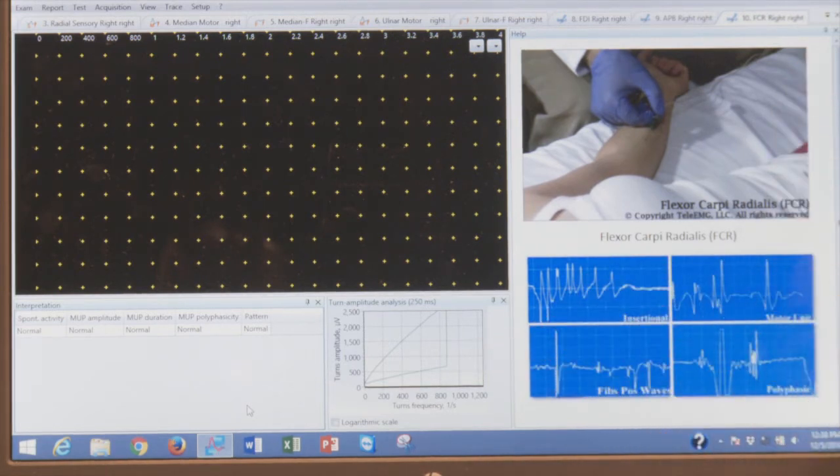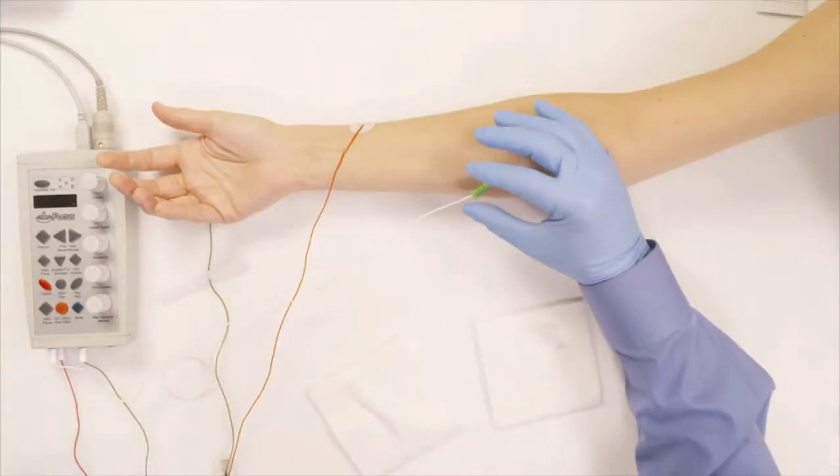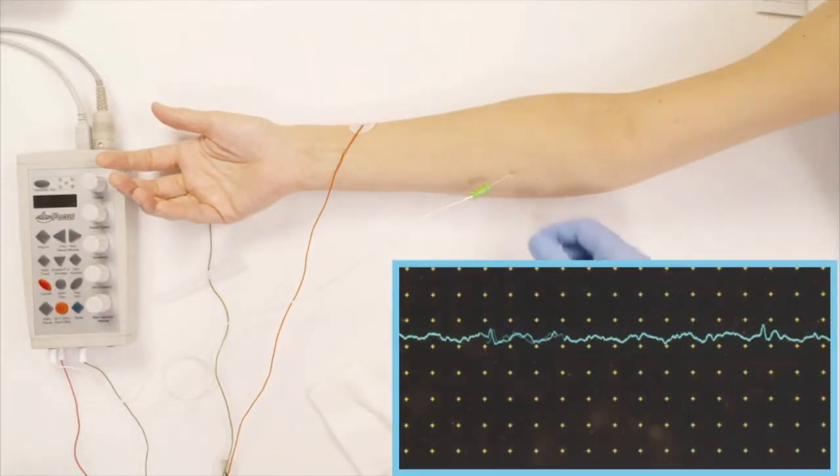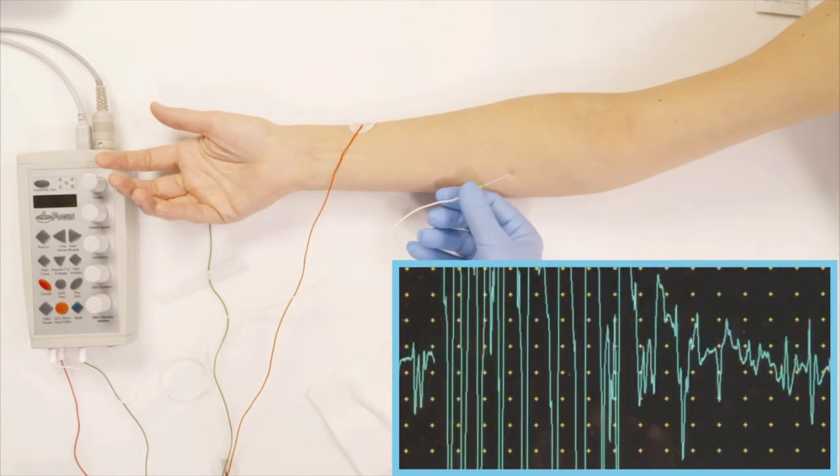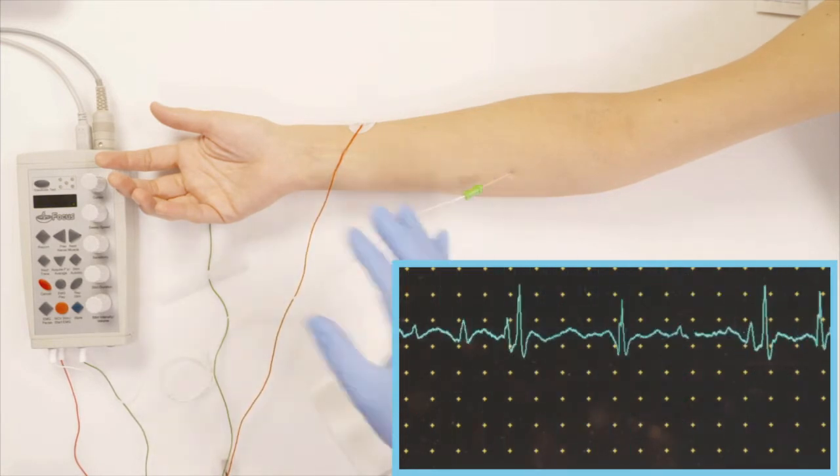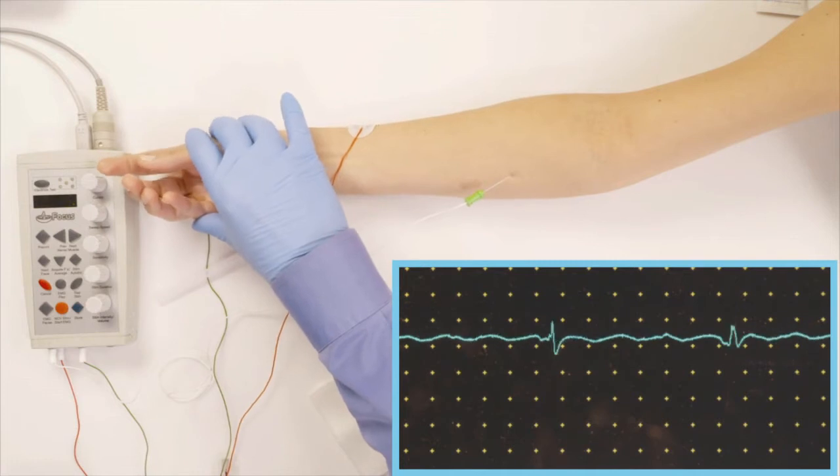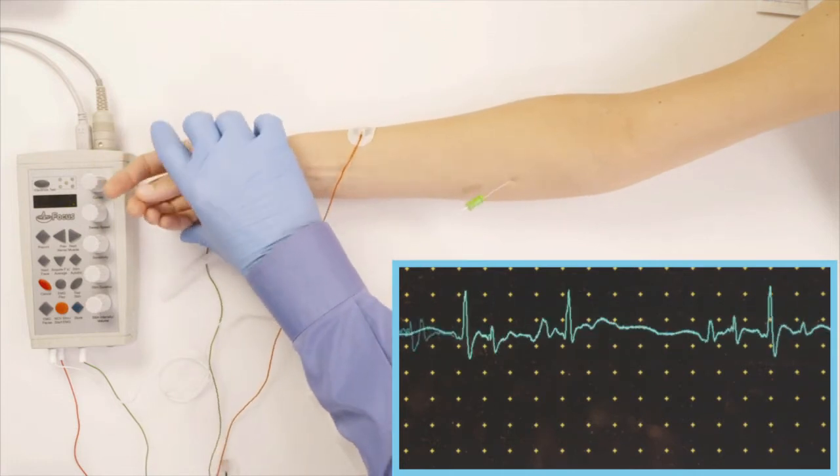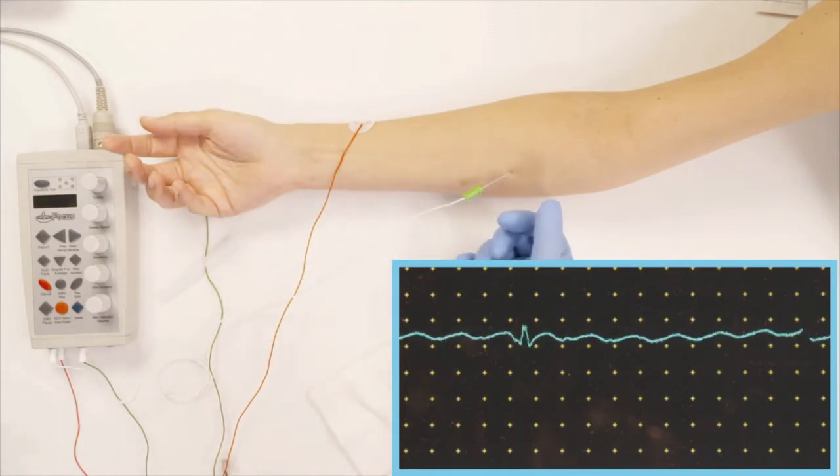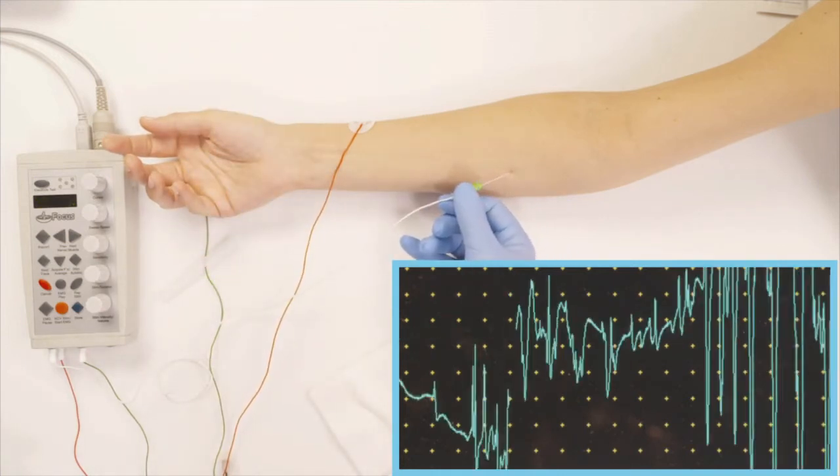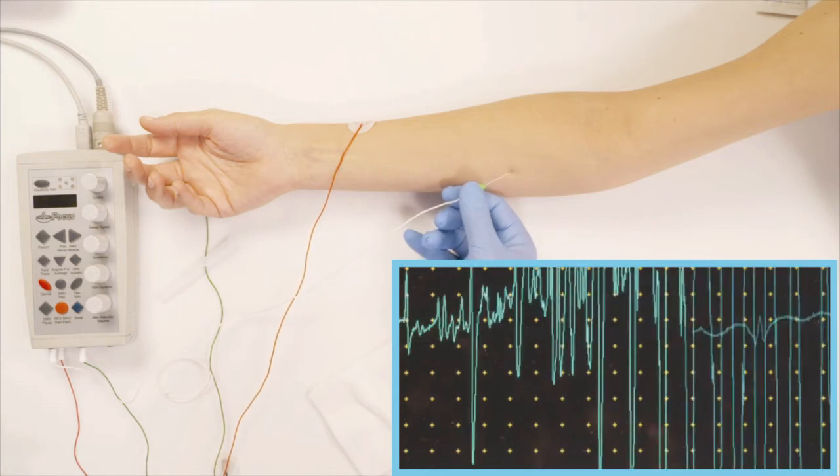Now I'm gonna start to see if I get insertional activity and I'm trying to find out if there is activity that persists. Here she's contracting a little bit. Relax a little bit more. That's perfect relaxation. You can see the spike and it must stop as soon as you stop.